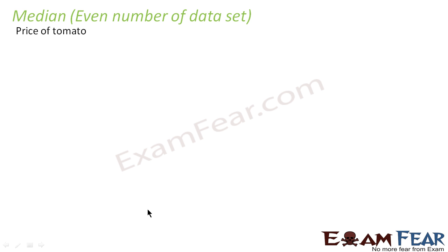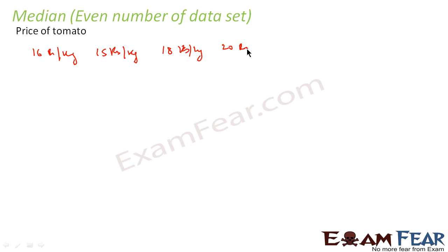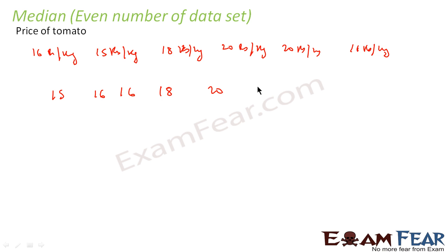Let's take one more example to find the median where the number of data is even. For example, the price of tomato: you went to a vegetable market to inquire about the price. The first guy said 16 rupees per kg, second said 15, third said 18, fourth said 20, fifth said 20, and the sixth said 16. Now we arrange in ascending order: 15, 16, 16, 18, 20, 20.